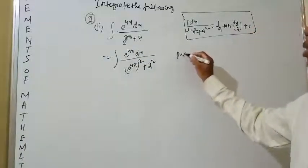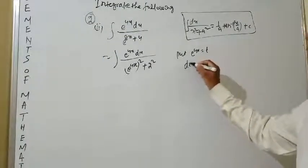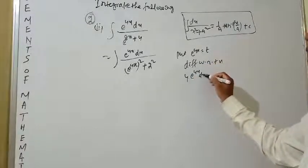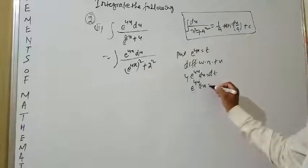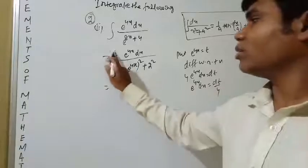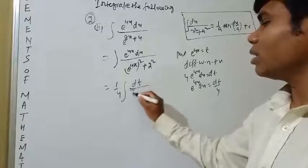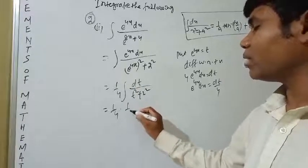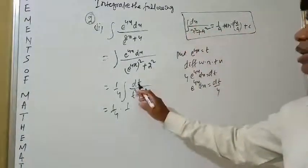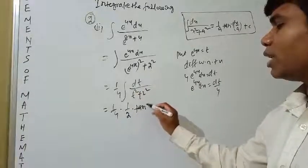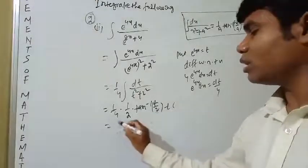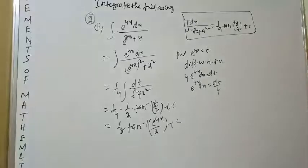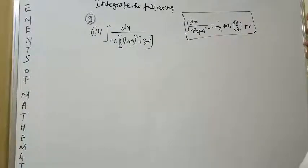Now put e^(4x) = t. Differentiating with respect to x: derivative of e^(4x) is e^(4x) × 4 = dt/dx, so e^(4x) dx = dt/4. Substituting: (1/4) ∫dt / (t² + 2²) = (1/4) × (1/2) tan⁻¹(t/2) + c = (1/8) tan⁻¹(e^(4x)/2) + c.